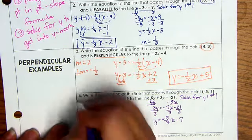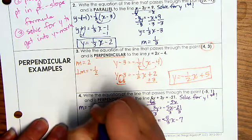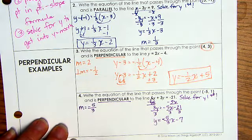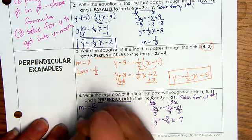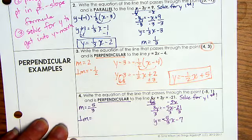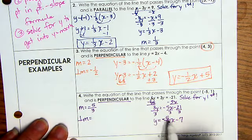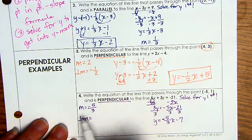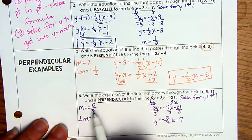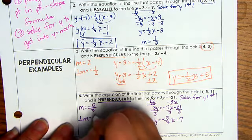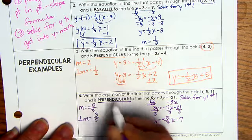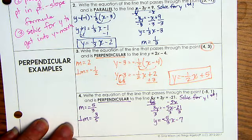So now I can pull out the original slope and find what my perpendicular slope is. The perpendicular, since this is a negative 5 thirds originally, then that means I flip it and make it positive. So it's going to become 3 fifths. This is the slope that I'm going to use.